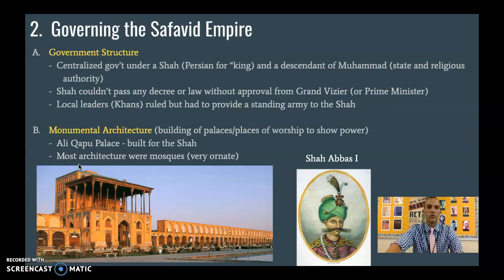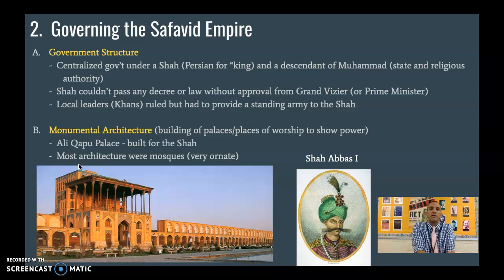So the question becomes: how do you rule this? Similar to the Ottomans, we have a centralized government led by someone who gets the title of Shah. In Persian, Shah just means king. He is the descendant of Muhammad because they can trace it back to Ali, who was Muhammad's cousin and son-in-law. So it's a state authority and a religious authority — they're doing both.